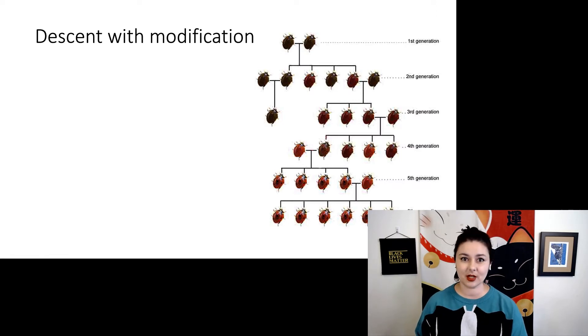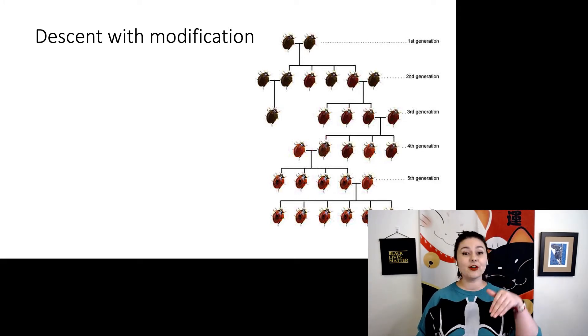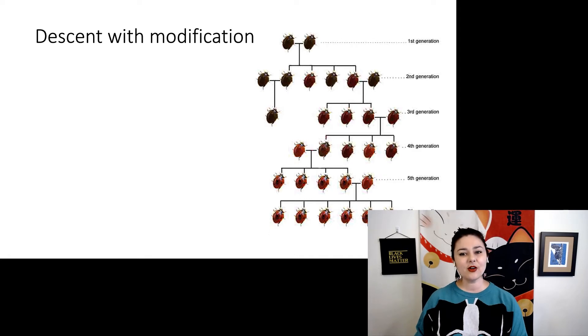Our next theory is descent with modification. Rather than looking at common organisms and kind of looking backwards, now we're going to look forwards with descent with modification. This is the idea that characteristics of a species can change over time. In our example here, our first generation of ladybugs, they are all very dark. In our second generation, we start to introduce a few which have a slight more red in them. And as those generations go on, we have more and more red pigmentation, eventually to where we end up with red ladybugs with black spots. But you can see this happened gradually. This doesn't always happen all at once.